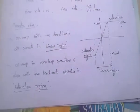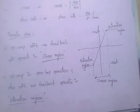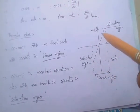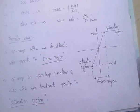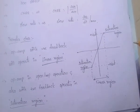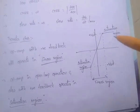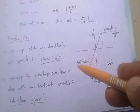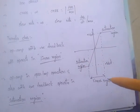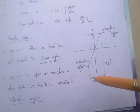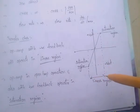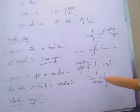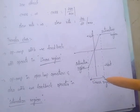Coming to the transfer characteristics of op-amp. This is the transfer characteristics of op-amp. Here, this is the linear region and this is the saturation region. An op-amp with negative feedback will operate in the linear region.